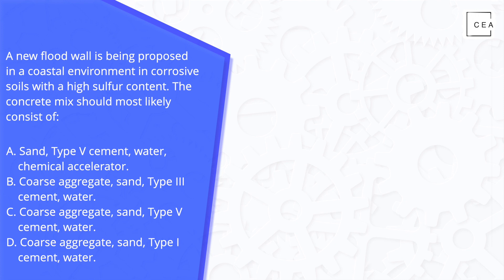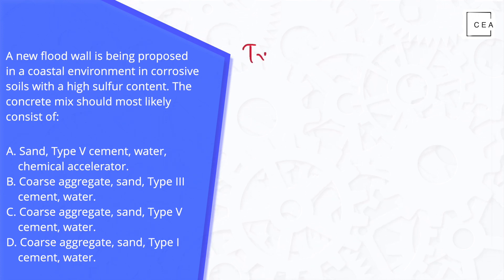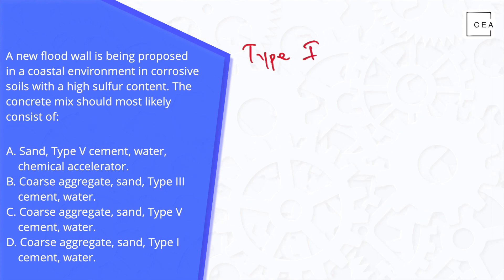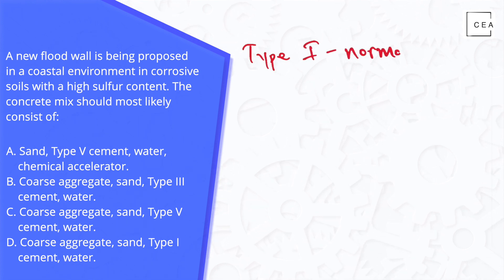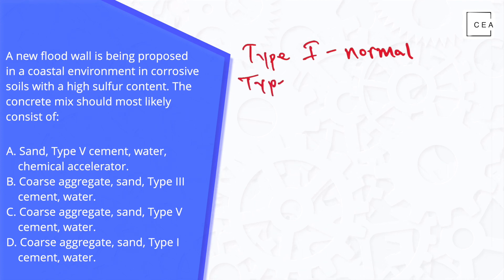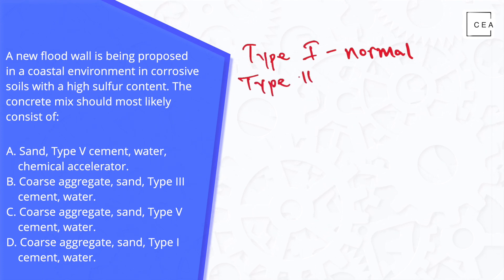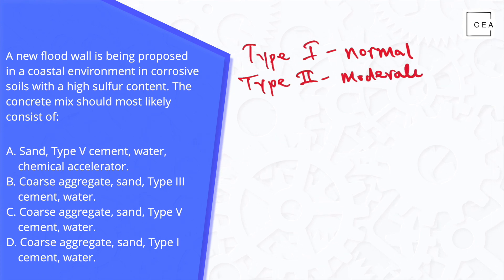Let's take a minute and review the different types of cement. We have Type 1 cement, which is known as normal cement, and Type 2 cement, which has moderate sulfur resistance.